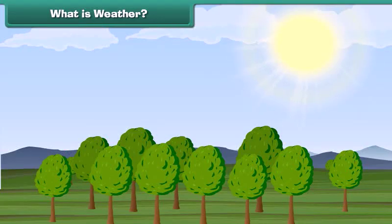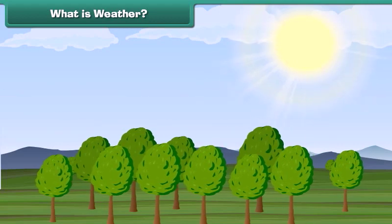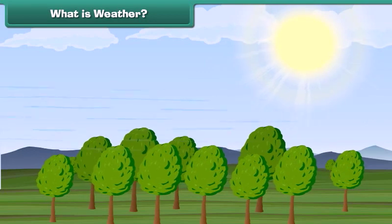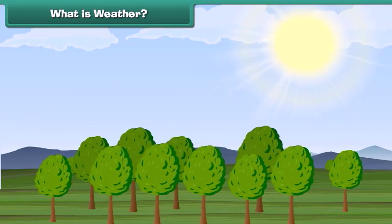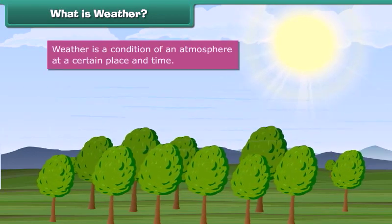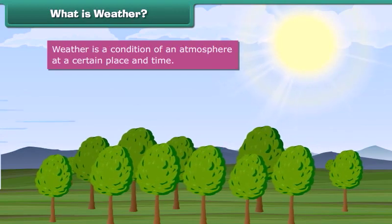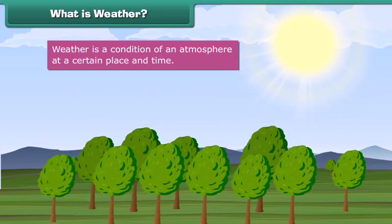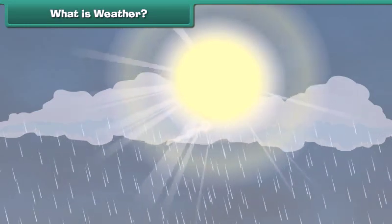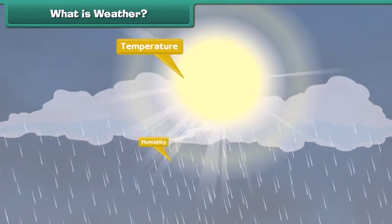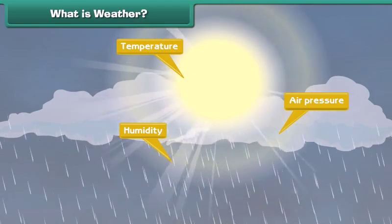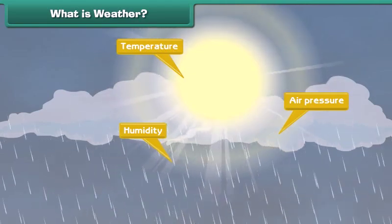Did you check today's weather forecast? What is this weather? Basically, weather is a condition of an atmosphere at a certain place and time. Weather depends on many factors such as temperature, humidity and air pressure. Come, let us learn about these factors.